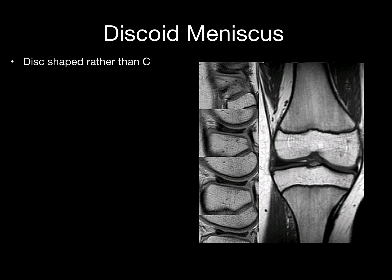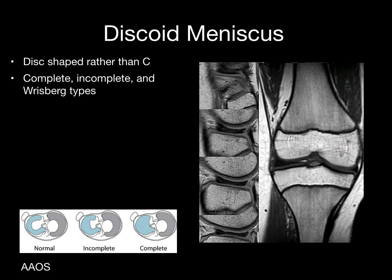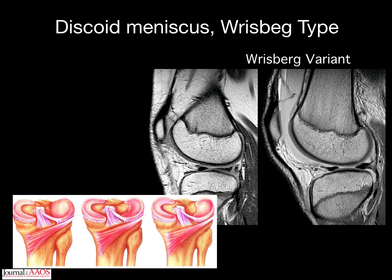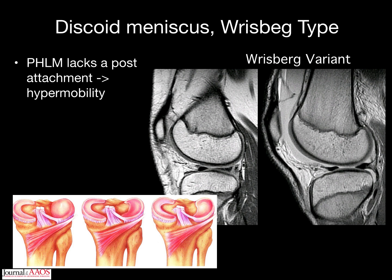Discoid meniscus refers to a variant where the meniscus is disc-shaped rather than C-shaped. It can be complete, incomplete, or a Wrisberg type. They occur more commonly in the lateral meniscus and may maintain a semilunar shape in the incomplete type. To identify these, look at a mid-coronal image — the meniscus should not extend more than 13 to 15 millimeters. With 4 to 5 millimeter slices, you should not see more than two bow ties; three or four bow ties indicates a discoid meniscus. The Wrisberg type is when the posterior horn of the lateral meniscus lacks a posterior attachment, leading to hypermobility, with the ligament of Wrisberg being the only stabilizing structure.